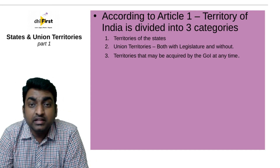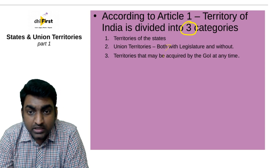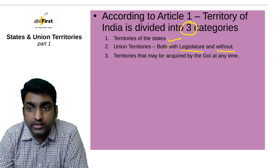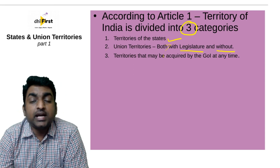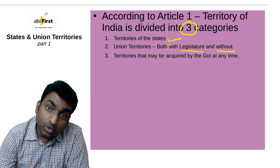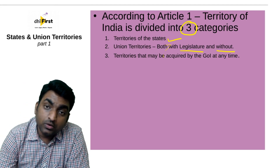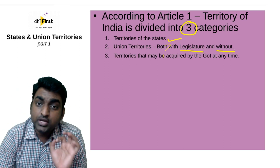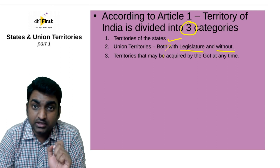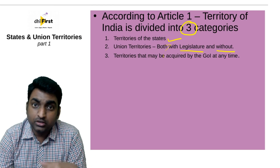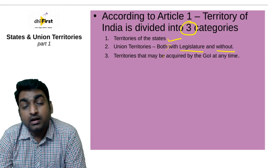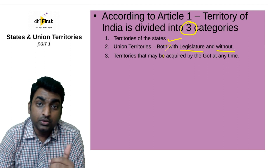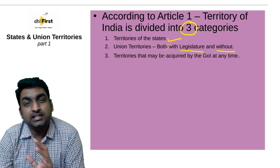Article 1 defines the territory of India into three categories: first, territories of the states; second, union territories — both with legislature and without legislature. Delhi and Puducherry are the two UTs which have a legislature, and now Jammu and Kashmir would also have a legislature as it is now a UT. Other UTs like Chandigarh or Daman and Diu don't have a legislature of their own — the entire law and administration is taken care of by the union government.